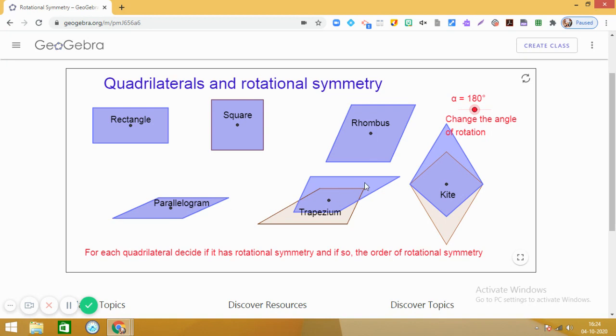But we have yet not found any angle of rotation for this trapezium and kite. So, I don't know whether they have the rotational symmetry or not. That we will verify. Let us continue the process and see if we are able to get the exact shape when we are rotating the different shapes around a point and the angle of rotation is less than 360 degrees. We have reached up to 180 degrees.